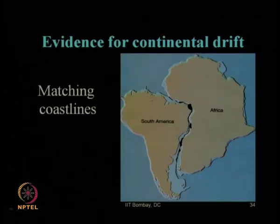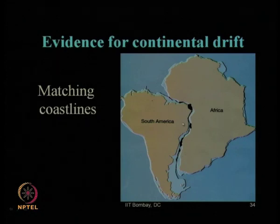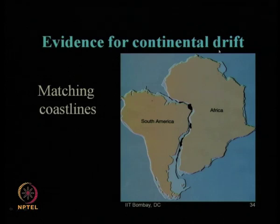If you look carefully at the eastern part of the South American plate and the western part of the African plate, you will see their coastlines match very well. This automatically suggests that these two blocks were together and with time they got separated. This is the concept of the continental drift theory of Wegener — matching the coastline to show that two continents must have remained together at some point.